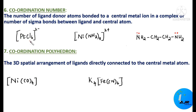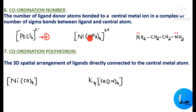For example, in [Fe(Cl)₆], there are 6 chlorine ligands, so the coordination number is 6. In [Cu(NH₃)₄], there are 4 NH₃ ligands and nitrogen is the donor — since NH₃ is monodentate, counting 4 ligands gives a coordination number of 4. For ethylenediamine, both nitrogen atoms donate electrons to the central atom, giving 2 donor atoms and a coordination number of 2.